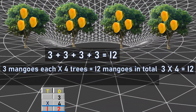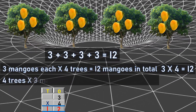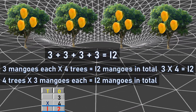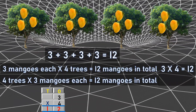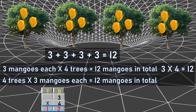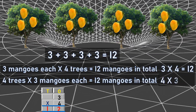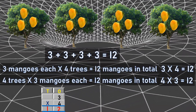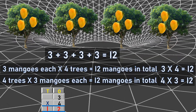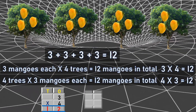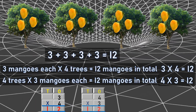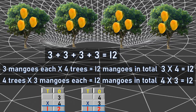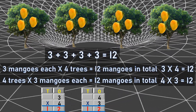Once again let's do the calculation with four. That is four trees into three mangoes each gives me twelve mangoes in total. For this, recall the four table: four into three is equal to twelve. Or four threes are twelve. This is my calculation — four threes are twelve.